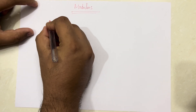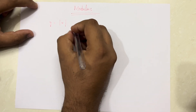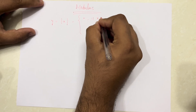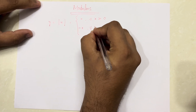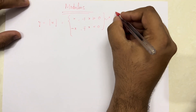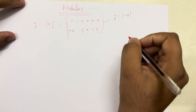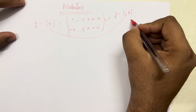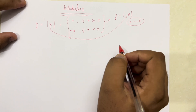Modulus is represented as y is equal to mod x, and this will give you the value of x if x is greater than or equal to 0, and minus x if x is less than 0. So let us understand what this means with the help of a graph.